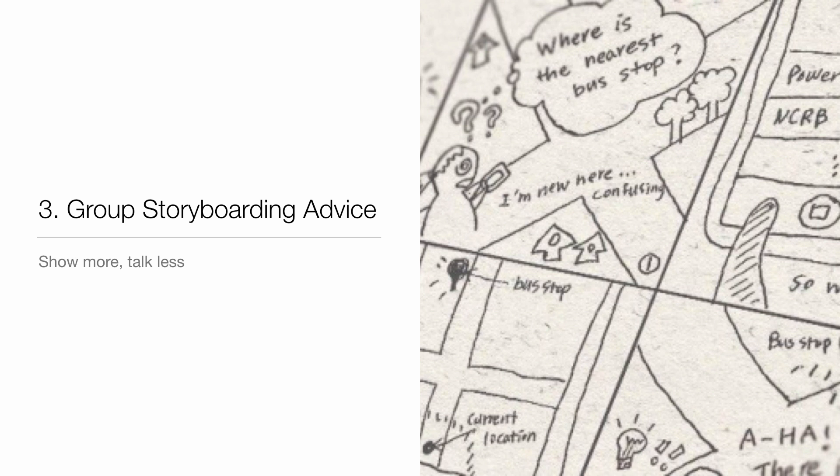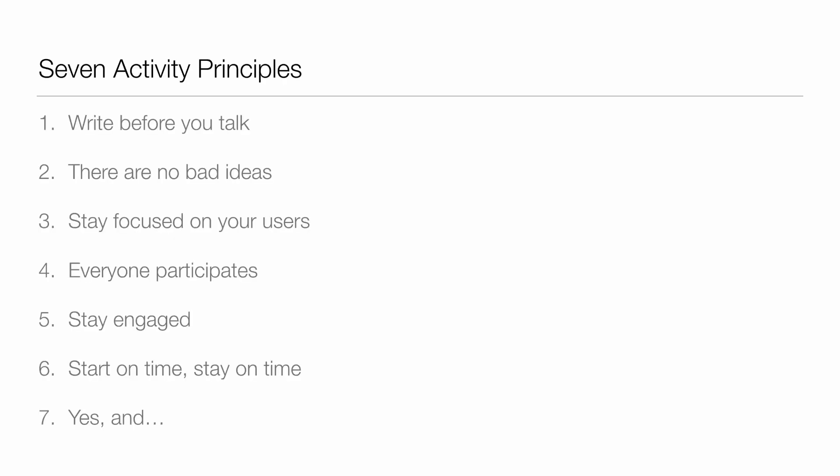We've looked at how to storyboard — what about some advice for working in a team? How do you effectively work when there are multiple people coming up with ideas and trying to communicate them through a storyboard? There are seven principles: before you talk, there are no bad ideas, stay focused, get everyone to participate, stay engaged, and start on time and stay on time.